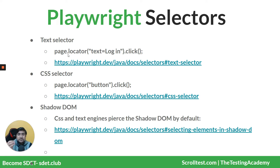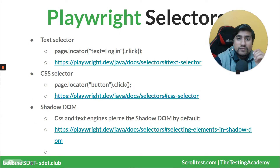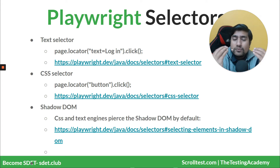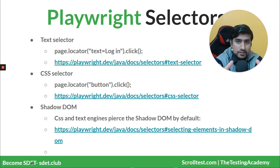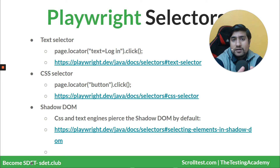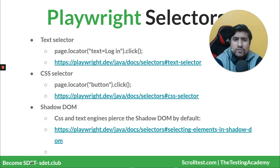The first selector type is a text selector. First, you create a Playwright object, which gives you a Chrome instance, which gives you a browser instance, and from that you get a page. Once you've loaded a page and want to locate an element, you use page.locator with text equals login in double quotes and it will click on it. Similarly, CSS selectors are straightforward — call page.locator and enter any CSS locator.